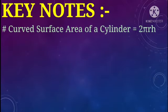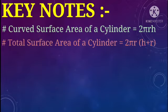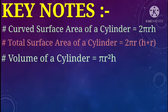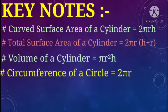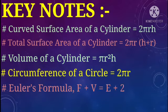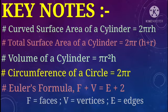Key note: Curved surface area of a cylinder is equal to 2πRH. Total surface area of a cylinder is equal to 2πR(H + R). Volume of a cylinder is equal to πR²H. Circumference of a circle is equal to 2πR. Euler's formula: F + V = E + 2, where F means faces, V means vertices, and E means edges.